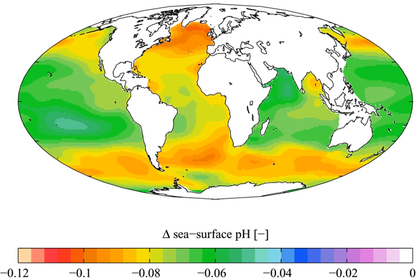Caldeira and Wickett placed the rate and magnitude of modern ocean acidification changes in the context of probable historical changes during the last 300 million years. Since the industrial revolution began, the ocean has absorbed about a third of the CO2 we have produced, and it is estimated that surface ocean pH has dropped by slightly more than 0.1 units on the logarithmic scale of pH, representing about a 29% increase in H+.